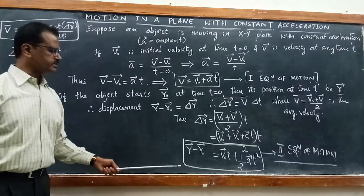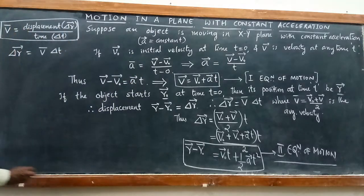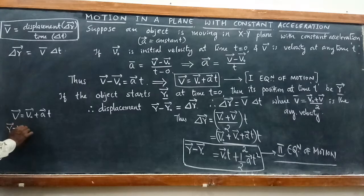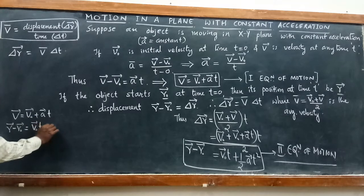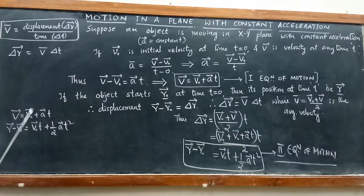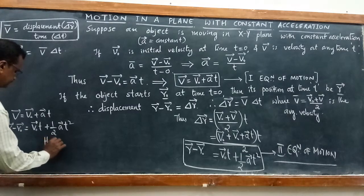So the first and second equations of motion for a particle in the XY plane are: vector v = v₀ + at, and vector r − r₀ = v₀t + ½at². In one-dimensional motion there was only one component (x); in two-dimensional motion the vectors have both x and y components.